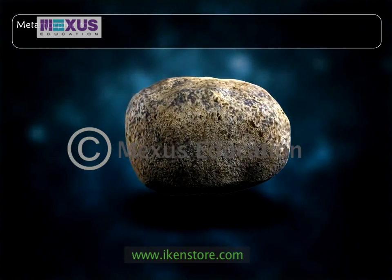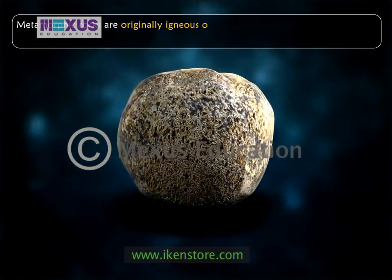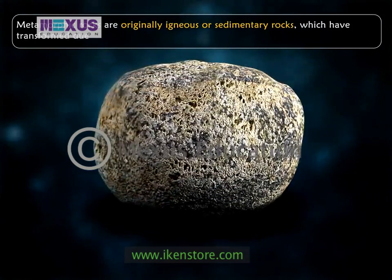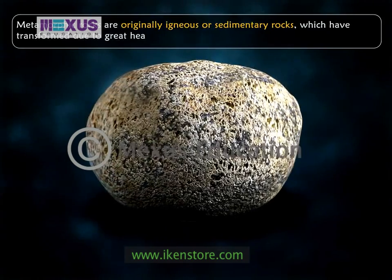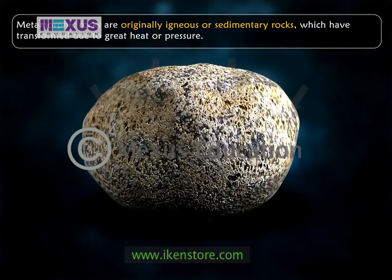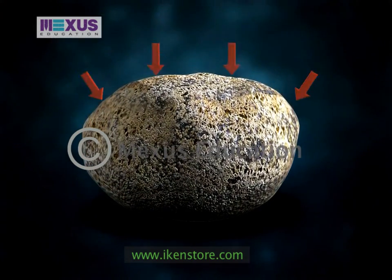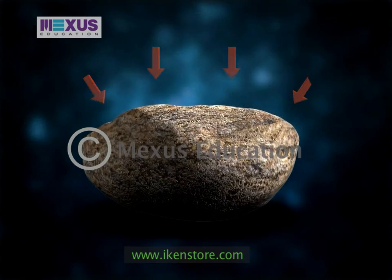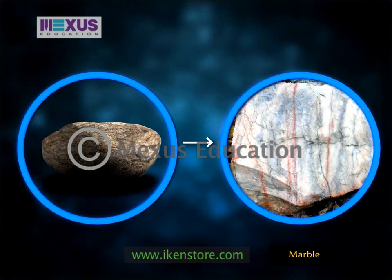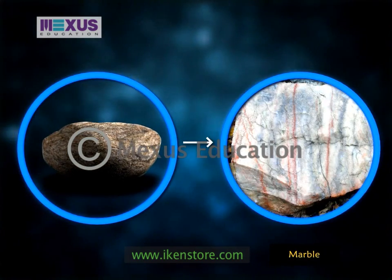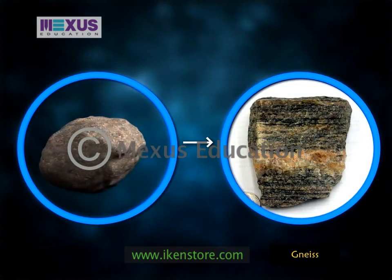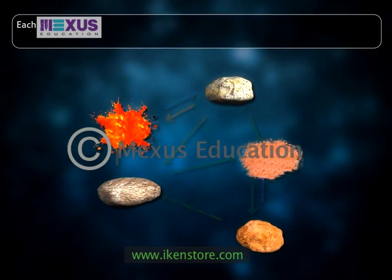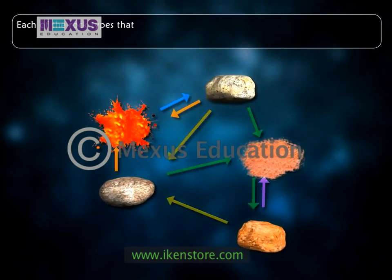Metamorphic rocks are originally igneous or sedimentary rocks which have transformed due to great heat or pressure. For example, the sedimentary rock limestone metamorphoses into marble, and igneous rock granite changes into gneiss.